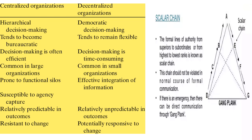Decentralized organizations are helpful when the organization is passing through turbulent times. The scalar chain means a formal line of authority flowing from the superior to the subordinate. This chain should not be violated, but in certain circumstances it can be, and we call that a gangplank.